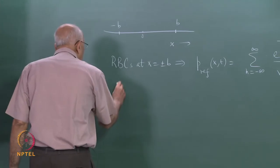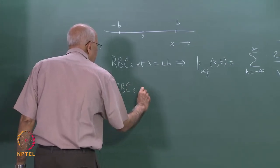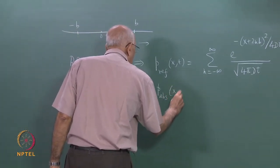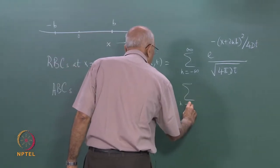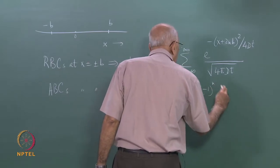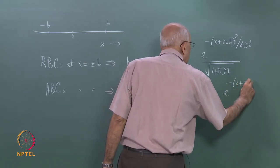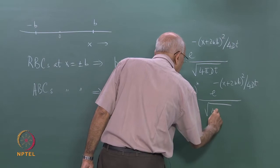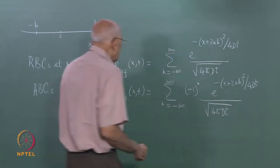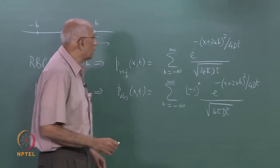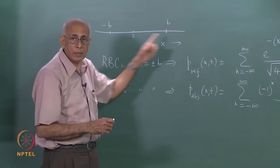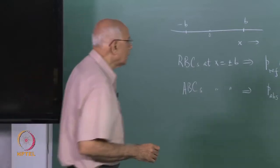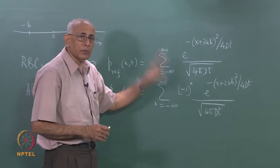On the other hand, if you have absorbing boundary conditions at these points, p_absorbing of x,t is the same summation but with an additional factor of (-1)^n over the original expression divided by the same normalization. The fact that you have this (-1)^n factor makes these functions very different, even though they may look similar, because the probability density vanishes at the two boundary points.